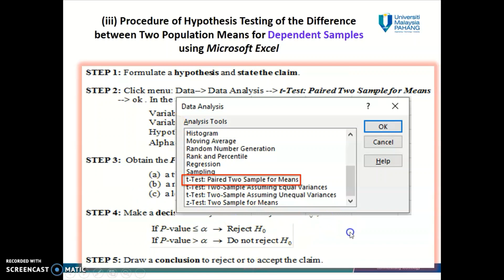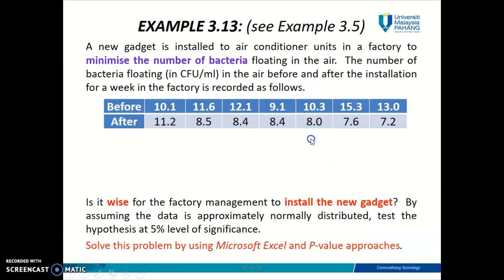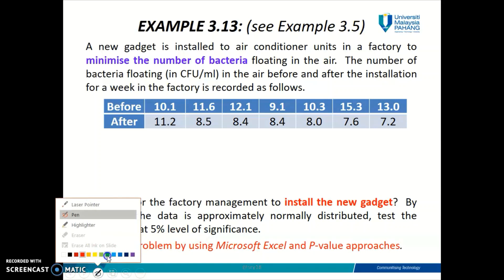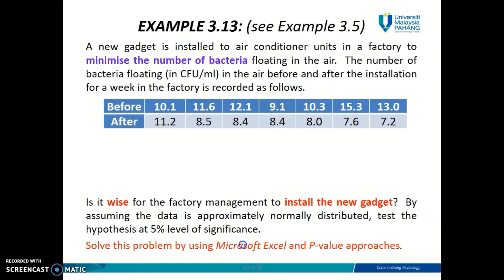We're going to apply this procedure to example 3.13. This example is about a new gadget that needs to be installed in the air conditioner to minimize the number of bacteria floating in the air. The question is: is it wise for the factory management to install the new gadget? We need to do a hypothesis test to make that decision, tested at a five percent level of significance, so alpha equals 0.05. Since we're solving using the p-value approach, we'll use Microsoft Excel.